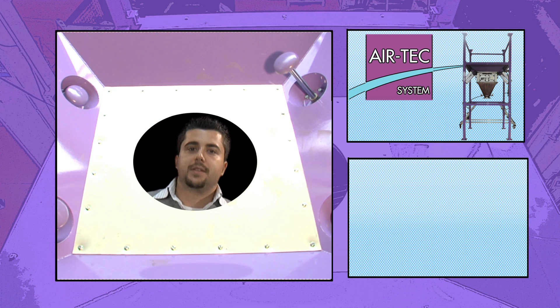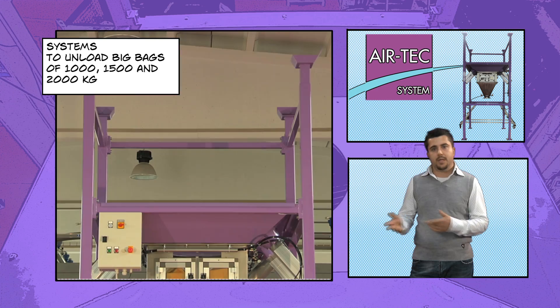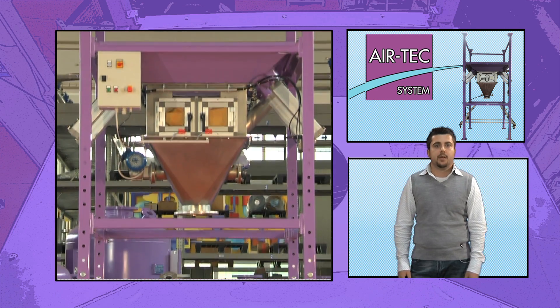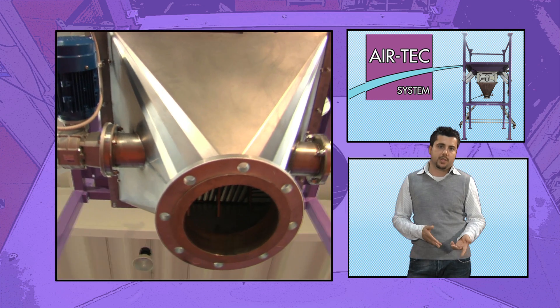Big bag unloading systems unload big bags of 1,000, 1,500 and 2,000 kilograms according to security standards. The machine is made up of a structure and an unloading hopper with pneumatic pistons.